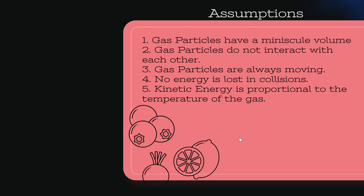The second assumption is that gas particles don't interact with each other — if two gas molecules come together, they bounce off each other and don't undergo a chemical reaction. Third, we assume that gas particles are always moving; in order for something to be a gas, it has to be moving in some form or another.